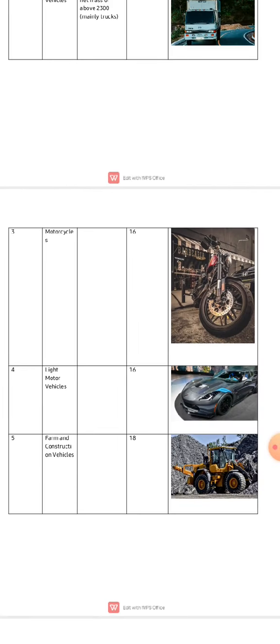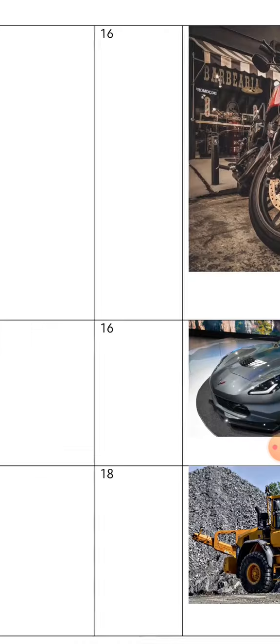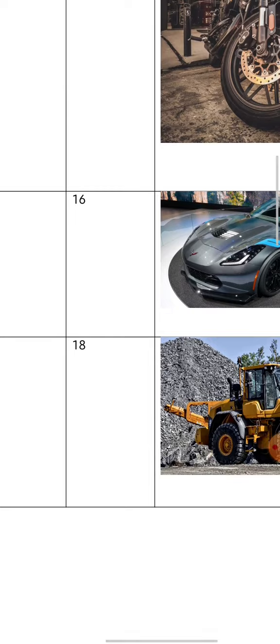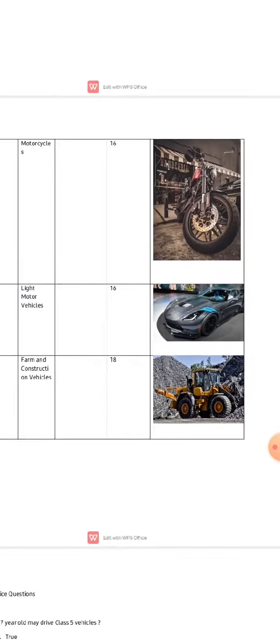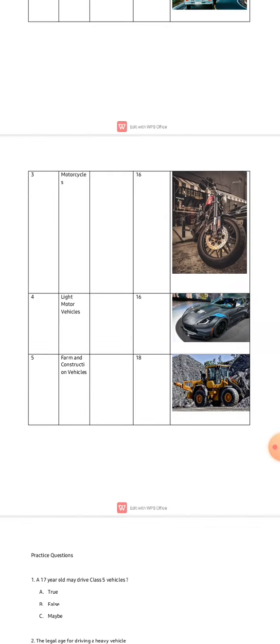For class five — that's our farm and construction vehicles — you need to be 18 years or older in Zimbabwe. Class five includes tractors, payloaders, combined harvesters, and earth-moving machines.